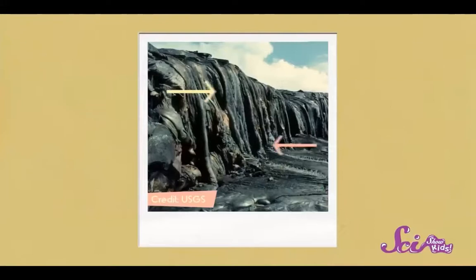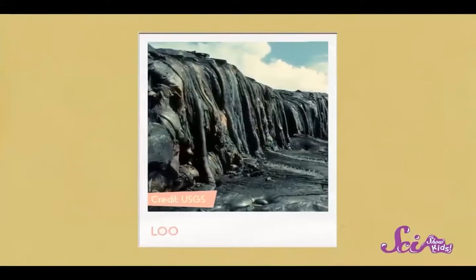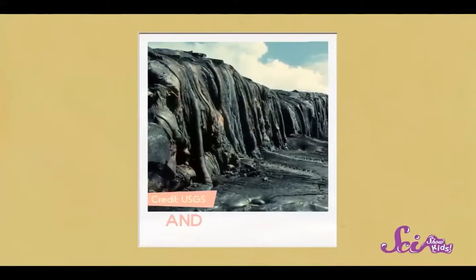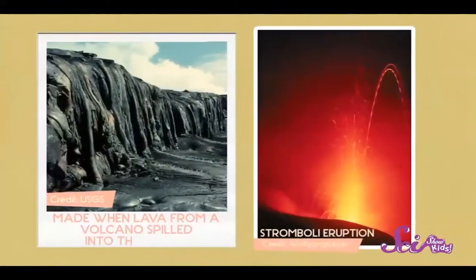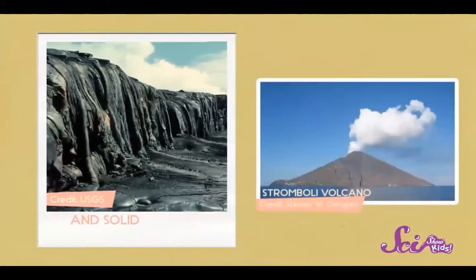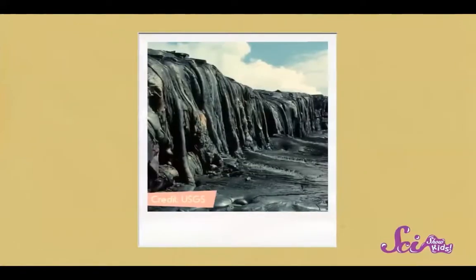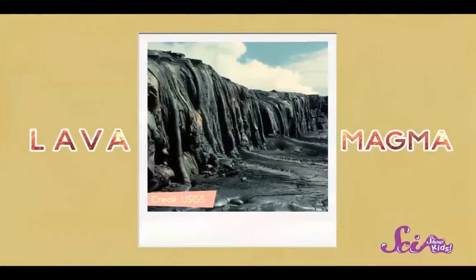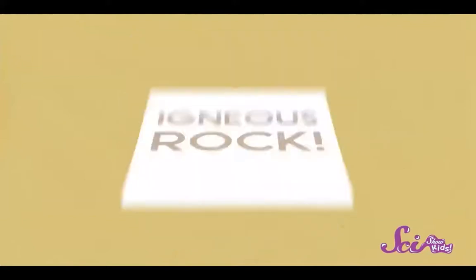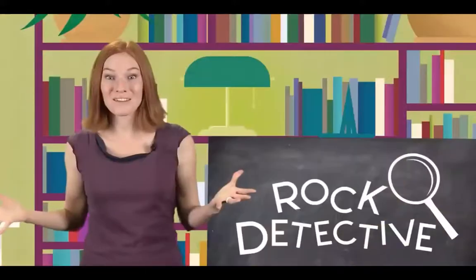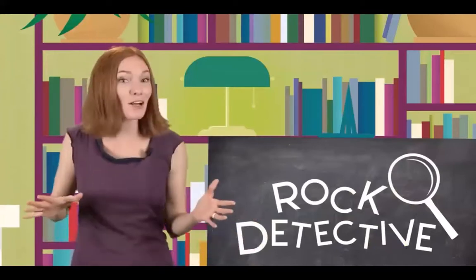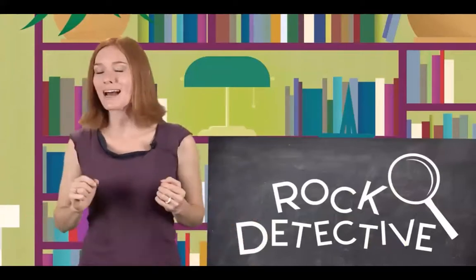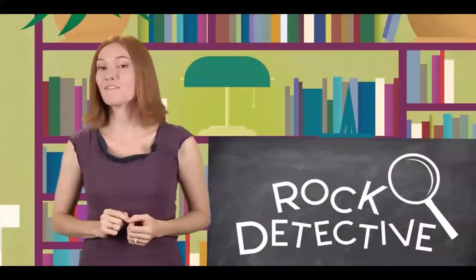Okay, just one more. This stuff hardly looks like rock at all — those big goopy loops of black rock look like they're practically melting. And at one time they were. They were made when lava from a volcano spilled into the ocean and solidified into rock. Since this rock came from lava or magma, it's igneous rock. So now you know there's more to rocks than meets the eye — they all have different colors and textures, and each one has a story to tell about how it formed.